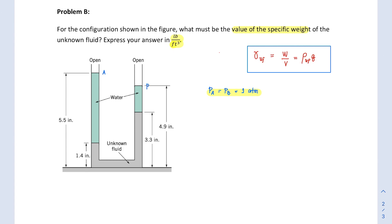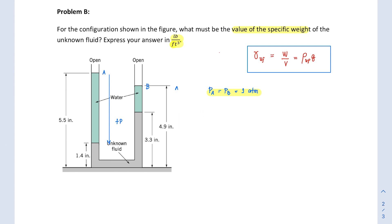This is point B. Another thing to note is that to solve this problem you need to understand that whenever we go down in a fluid the pressure generally increases, so we add a positive pressure term. Whenever we go up across a fluid column the pressure decreases, so we add a negative pressure term. That forms the central idea for how we solve this problem.